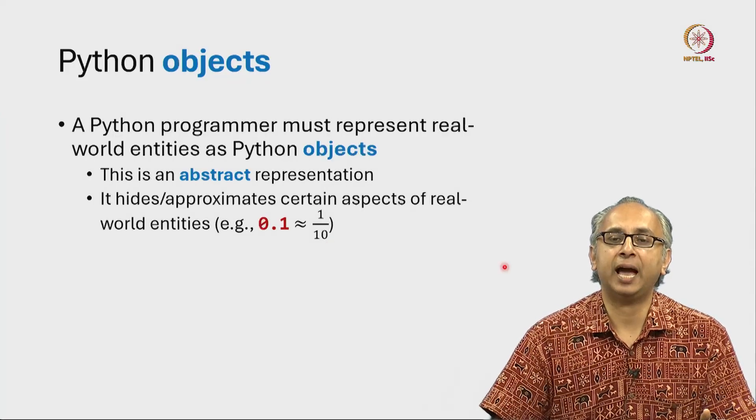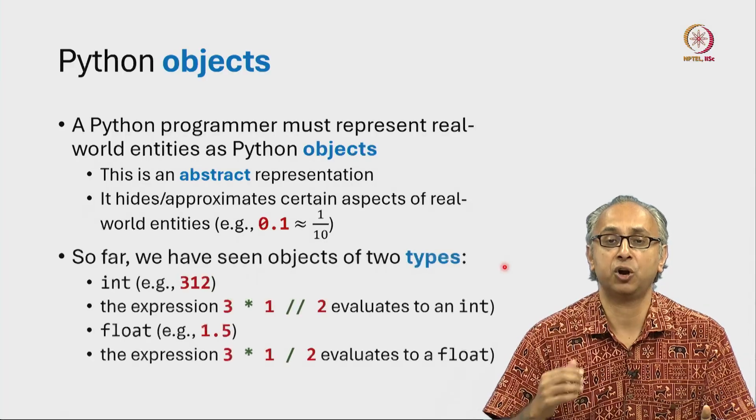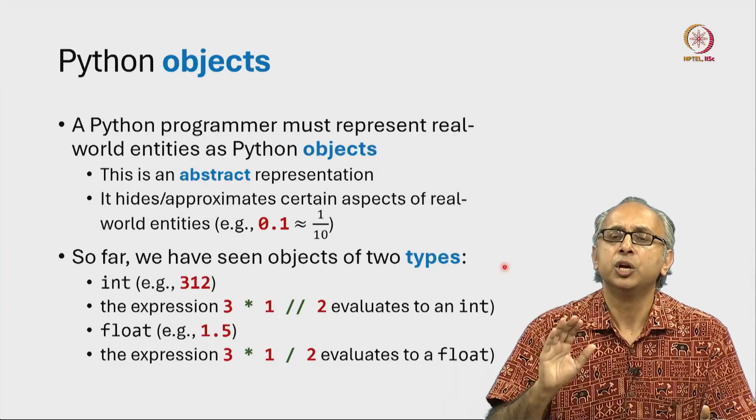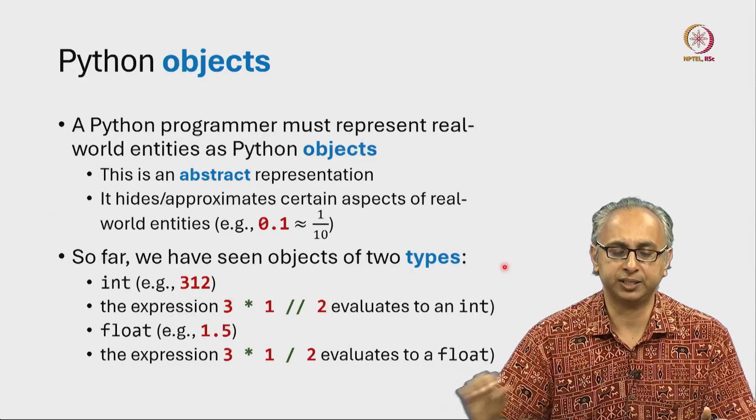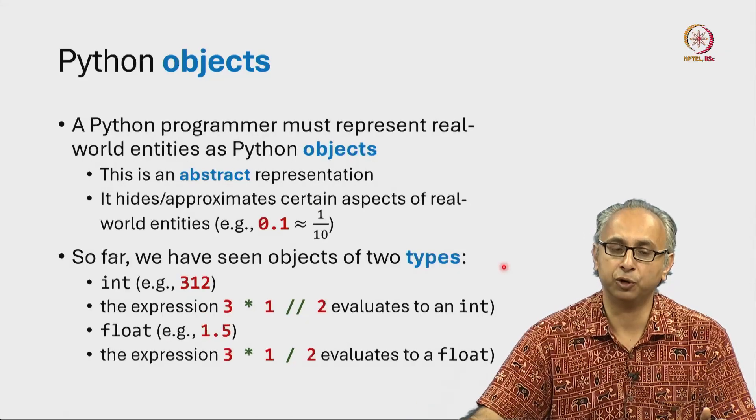Let's now take a closer look at different types of Python objects. So far, we have only seen two types of objects, integers and floats.